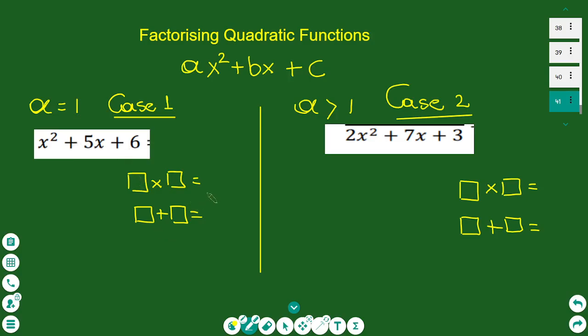We try to find two numbers to put into the brackets. The coefficients of x, we try to find two numbers that multiply to give you 6 and add together to give you 5. The numbers are 3 and 2. 3 times 2 is 6, and 3 plus 2 gives us 5.